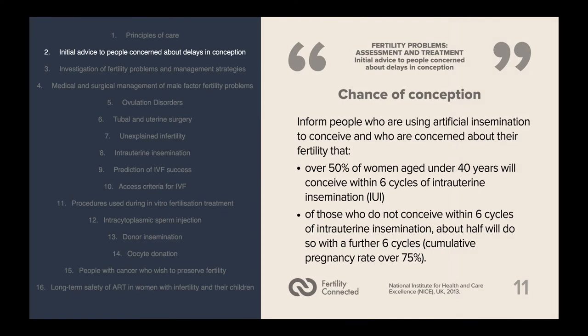People using artificial insemination to conceive who are concerned about their fertility should be informed that over 50% of women aged under 40 will conceive within six cycles of intrauterine insemination, also known as IUI. Of those who do not conceive within six cycles of IUI, about half will do so with a further six cycles, giving a cumulative pregnancy rate over 75%.